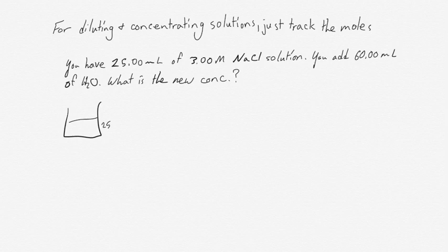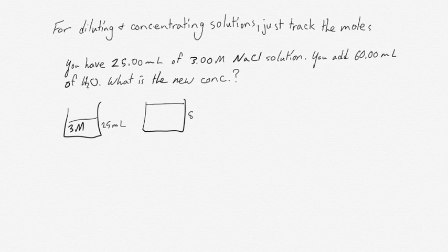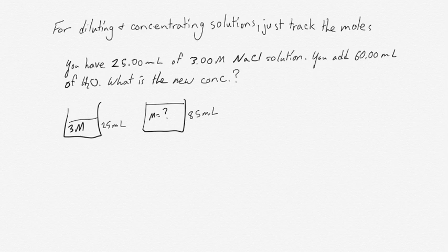So we have, initially, a container that has 25 milliliters of water with 3 molar sodium chloride. What we're going to do is dump in 60 more milliliters of water, giving us a total of 85 milliliters. The key point is that the number of moles of sodium chloride in that solution haven't changed — there's just more water, so we have a lower concentration.